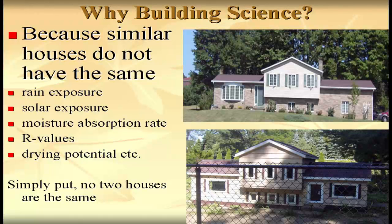Why building science? Basically, houses are all different. They do not have the same rain exposure or solar exposure. Some houses face south and west and get a lot more wind-driven rain. Some houses have different moisture absorption rates depending on whether it's a brick, stucco, or steel metal home. R-values are different — some older houses have no insulation, and some newer houses are super insulated. The drying potential is completely different. Simply put, no two houses are the same.